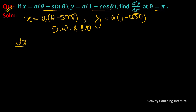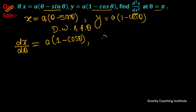dx/dθ equals a — differentiating θ gives 1, and differentiating sinθ gives cosθ, so dx/dθ = a(1 - cosθ). dy/dθ equals a — differentiating 1 - cosθ gives sinθ, so dy/dθ = a sinθ.